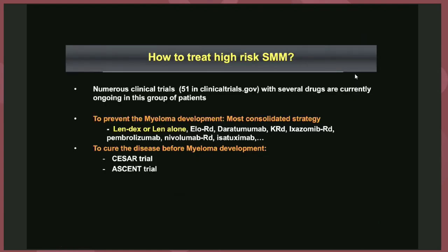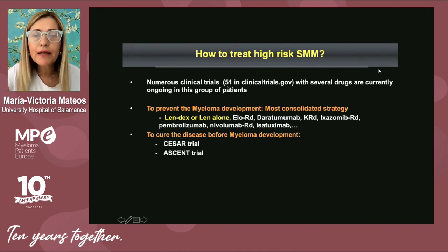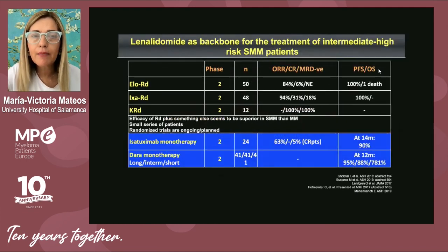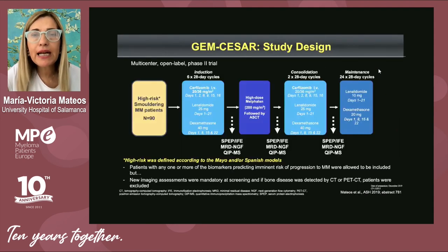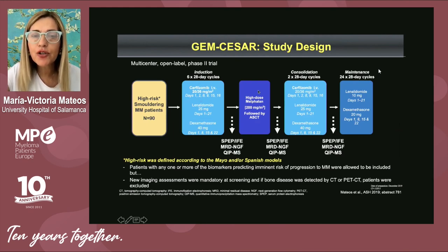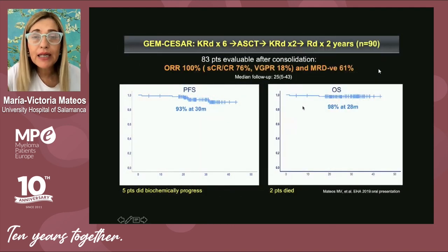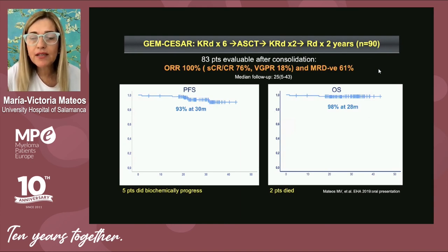Building on the platform of lenalidomide and dexamethasone, there are more than 50 clinical trials ongoing in this specific population. Some trials add a third drug such as elotuzumab, carfilzomib, or ixazomib. There are also trials evaluating anti-CD38 monoclonal antibodies with very promising efficacy data, as well as curative approaches. The Spanish myeloma group planned a curative strategy in 90 high-risk smoldering myeloma patients treated with induction, transplant, consolidation, and maintenance. Preliminary data are quite promising in terms of efficacy, safety, progression-free survival, and overall survival, though more data are needed over time.